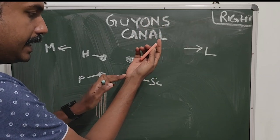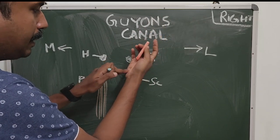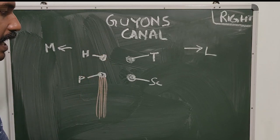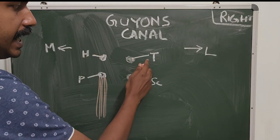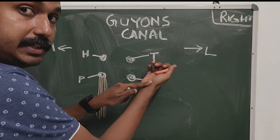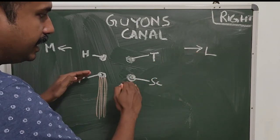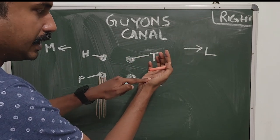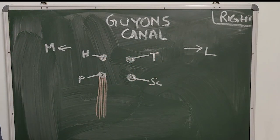Distal to that, within the hypothenar eminence, if you deep palpate you can feel the hook of the hamate. These two are on the medial aspect. On the lateral aspect you have the tubercle of the scaphoid in the proximal row, and on the distal row on the lateral side you have the crest of the trapezium. These are the four bony points.